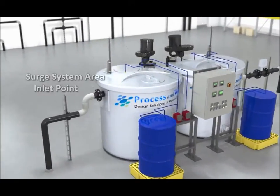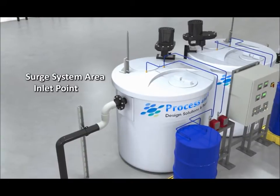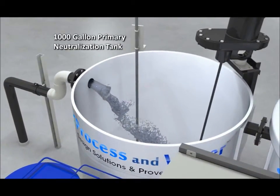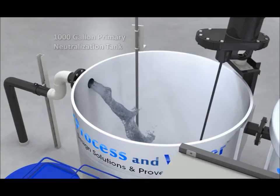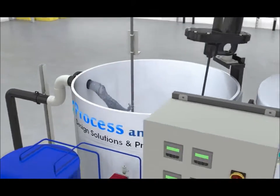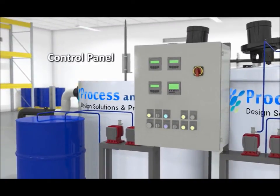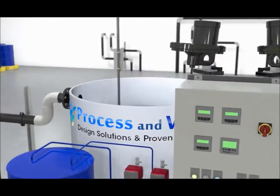The solution that is transferred from the surge system area is collected within the primary pH neutralization tank. Using the control panel, an operator may begin the mixing process, agitating the water.